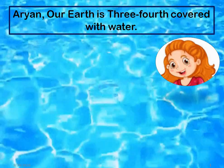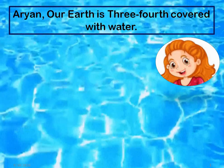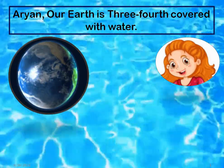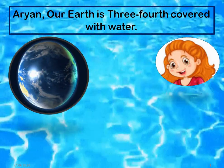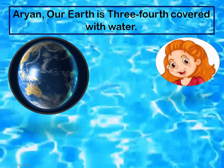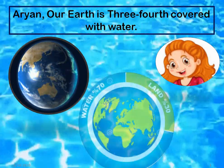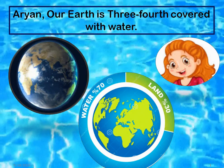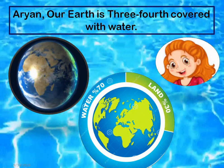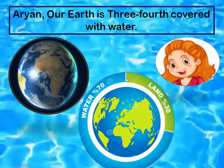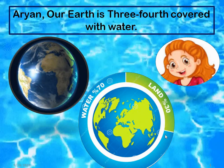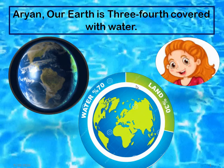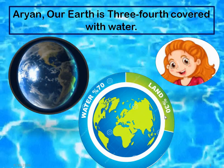Aryan, our earth is three-fourths covered with water. This is our earth, and look how much blue it is. This blue represents water and the yellow section represents the land. If this is the earth, then this much blue band is water. Water is 70 percent and land is about 30 percent.